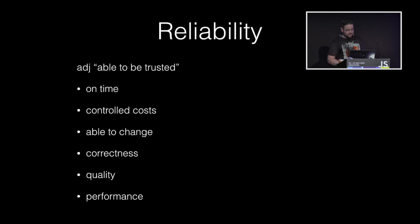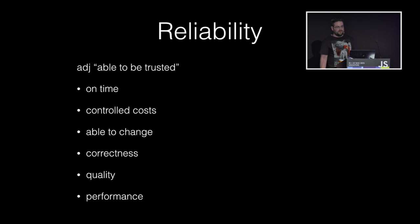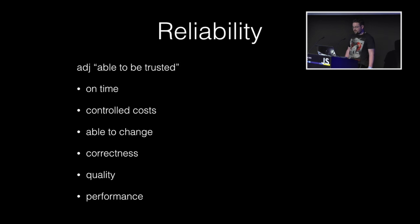Let's establish some common terminology. I do email, and email happens to be something users just expect to work. For me, reliability means that email is actually delivered, delivered quickly, and is accurate — it's primarily about quality and correctness. For you, reliability might mean software being delivered on time, controlling the cost of building and maintaining the software, or being able to confidently change the software. Almost all of us here probably care in one way or another about reliability and that our software can be trusted.